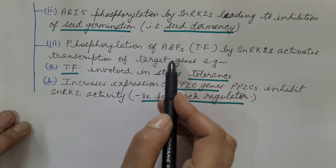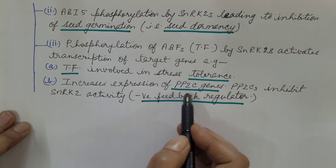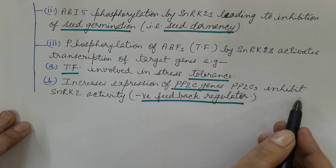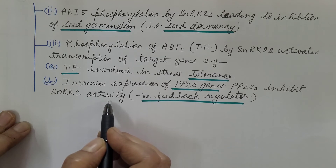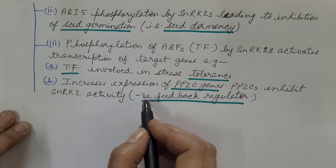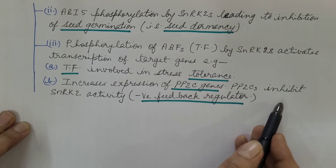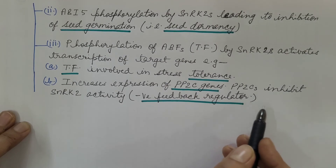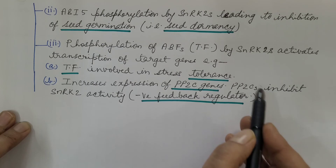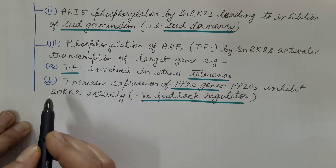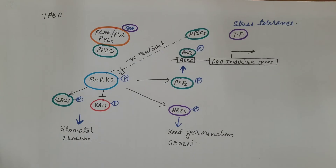This transcription factor also leads to transcription of PP2C genes. The PP2C produced then binds with SnRK2 and inhibits its activity, thus acting as a negative feedback regulator. When favorable conditions return, there is no need for ABA responses, and PP2C inhibits SnRK2 accordingly.